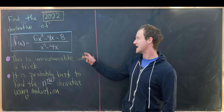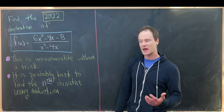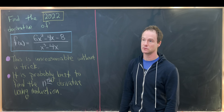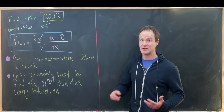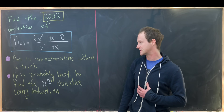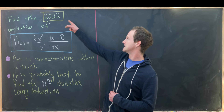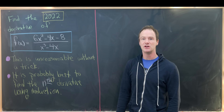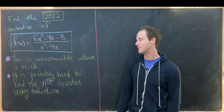The first hint is that this would be unreasonable unless there's a trick. If we were to just take the derivative over and over using the quotient rule, we would get something really unrecognizable with no apparent pattern. So there's probably some trick to rewrite this function before we get started. Also, the number 2022 is probably not special, so it's best to find the nth derivative for an arbitrary n by induction.